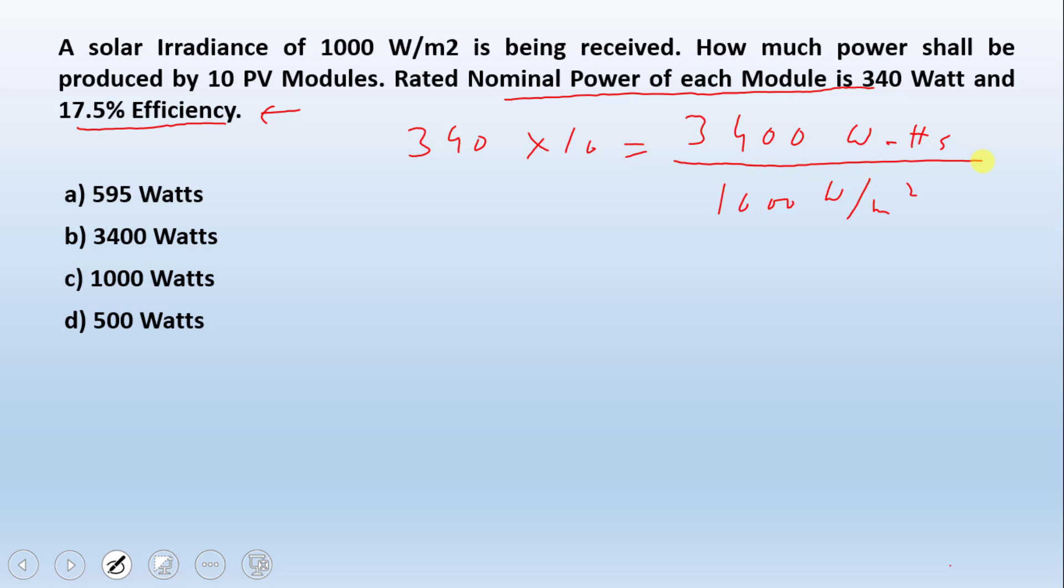For this question, the answer is 3400 watts and option B is the right answer. But suppose you are not given this 340 watts as a rated nominal power of the module. How are you going to calculate the power?